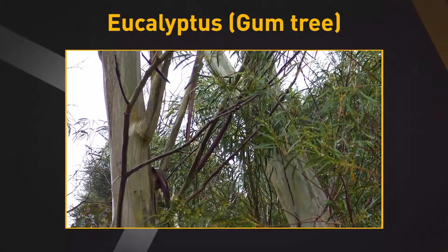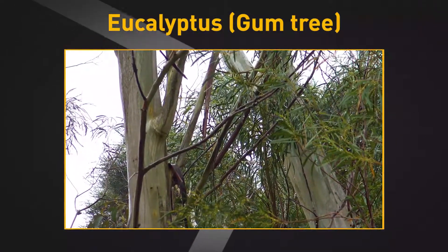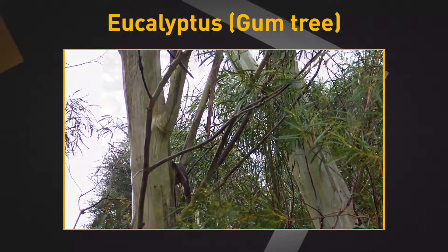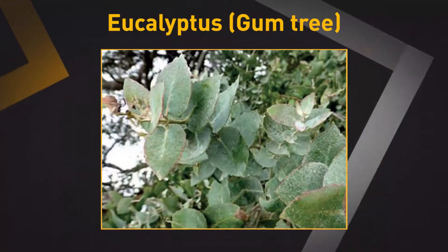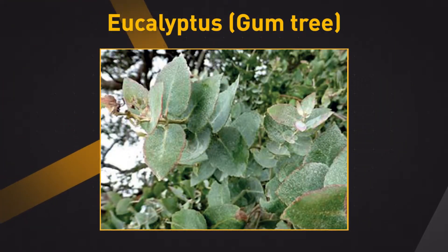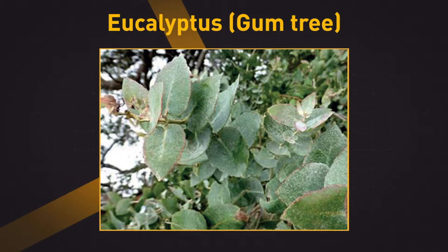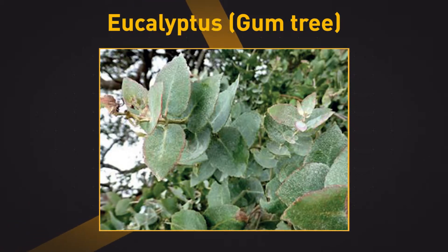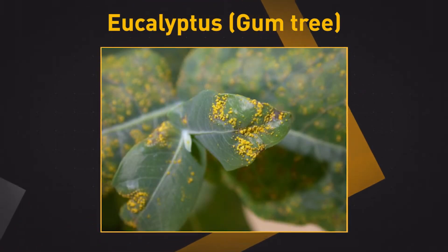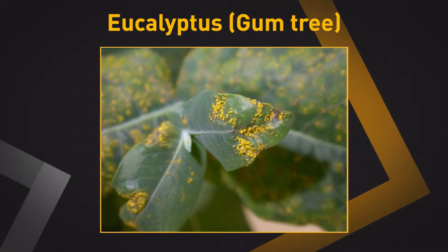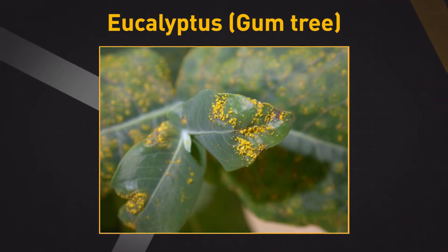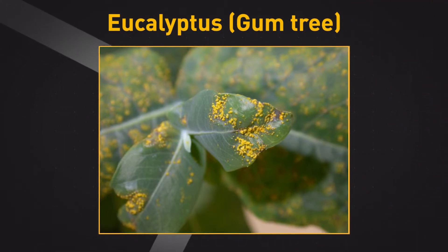Eucalyptus or gum trees may form a low shrub or a very large tree. The woody fruits are called gum nuts and are roughly cone shaped and open at one end to release the seeds. This is an example of eucalyptus with bright yellow powdery eruptions of spores appearing on both sides of the leaf.